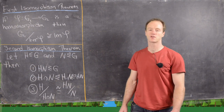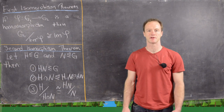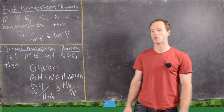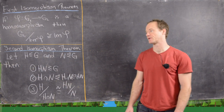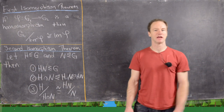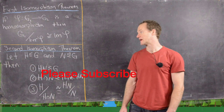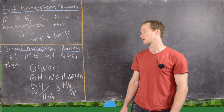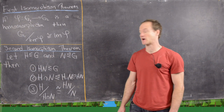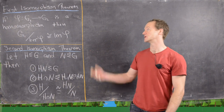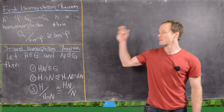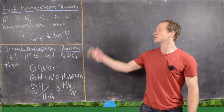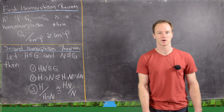In a previous video we looked at something called the first isomorphism theorem, and I made a huge hour-long video on a bunch of applications of the first isomorphism theorem. If you have any questions or want examples, I urge you to look at that video — it's a great resource for looking at examples of isomorphisms between groups, mostly using the first isomorphism theorem. Today we want to look at something called the second isomorphism theorem, so let's first recall the first.